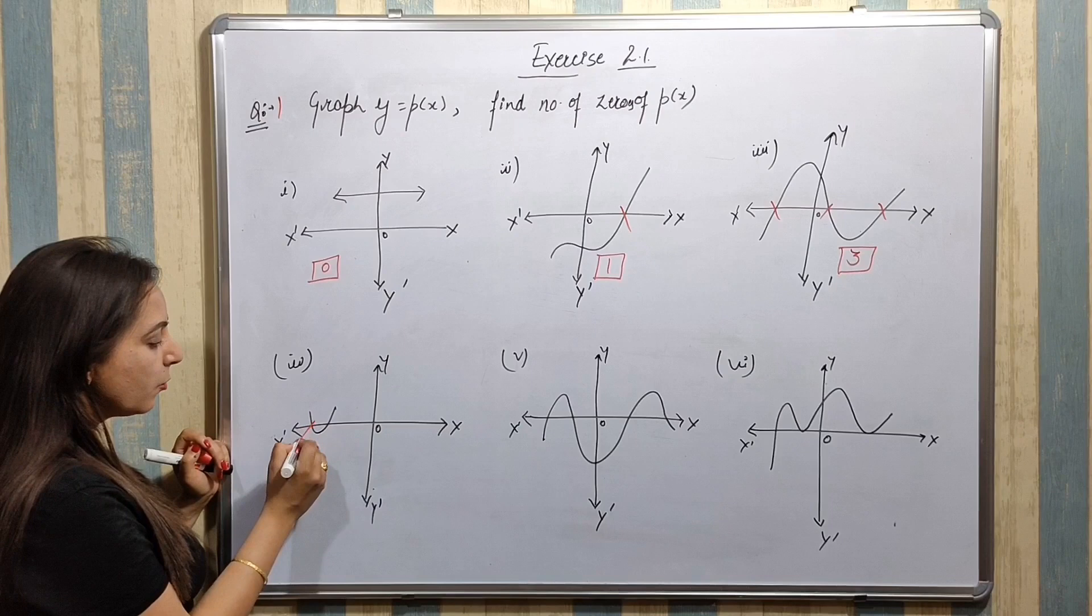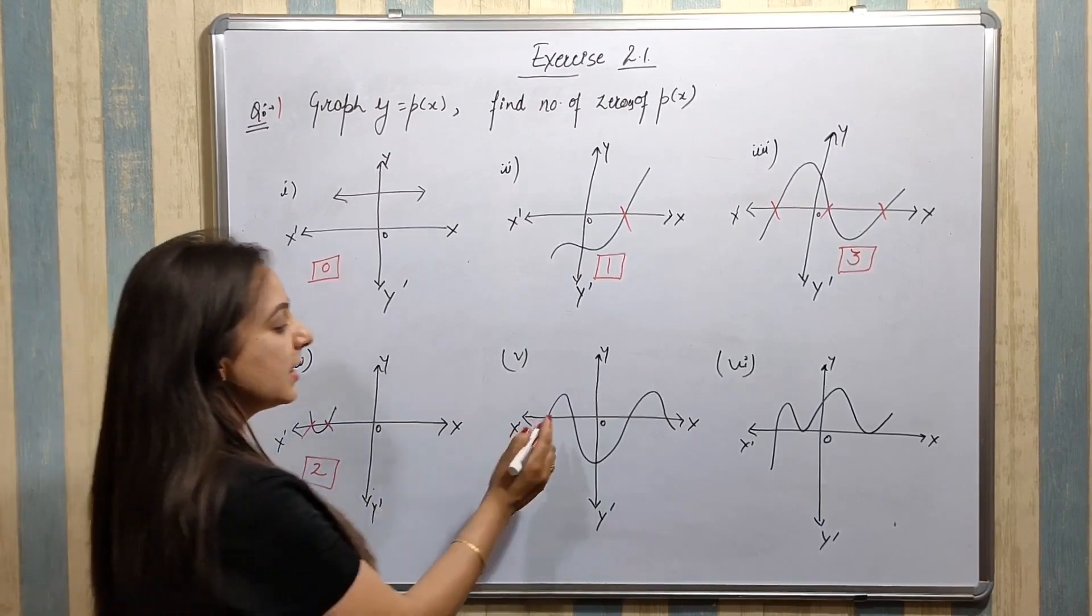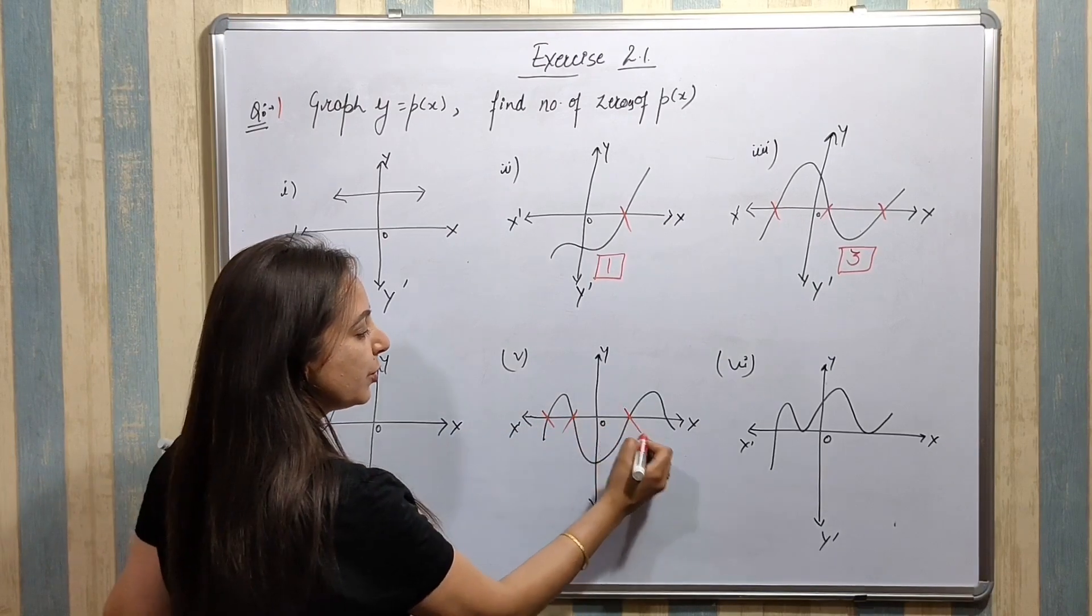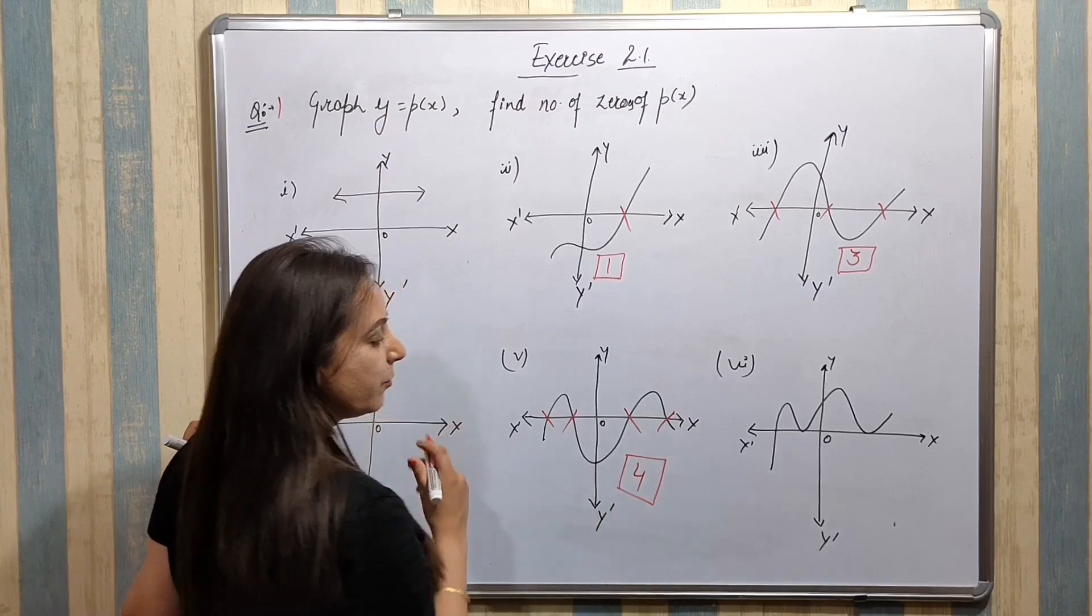Next example dhekho, yeh hai 1 or 2. Toh ismae number of zeros kitni nikal jayegi? Two, right? Next me dhekho, one, two, three and four. Number of zeros kitni nikal jayegi ismae? Four, kyunki four times x-axis me graph intersect hua hai.